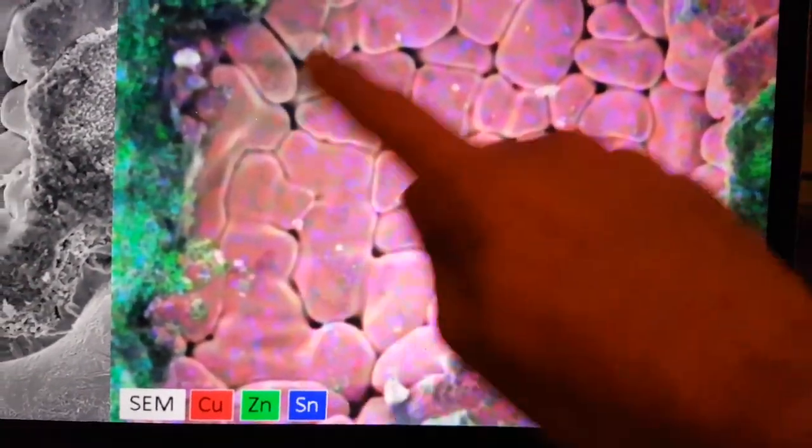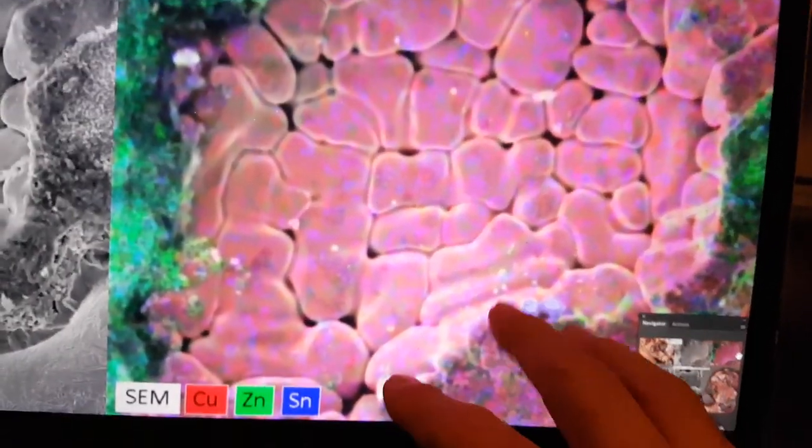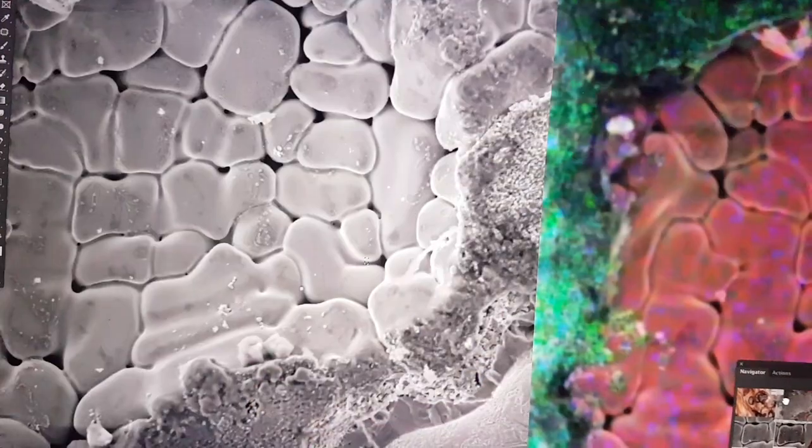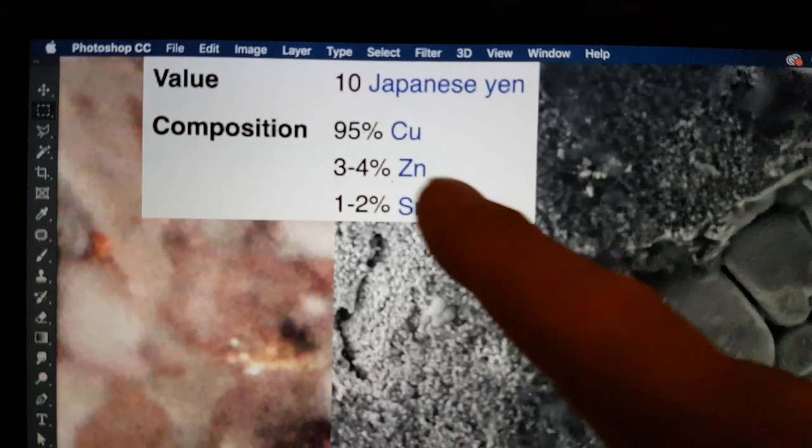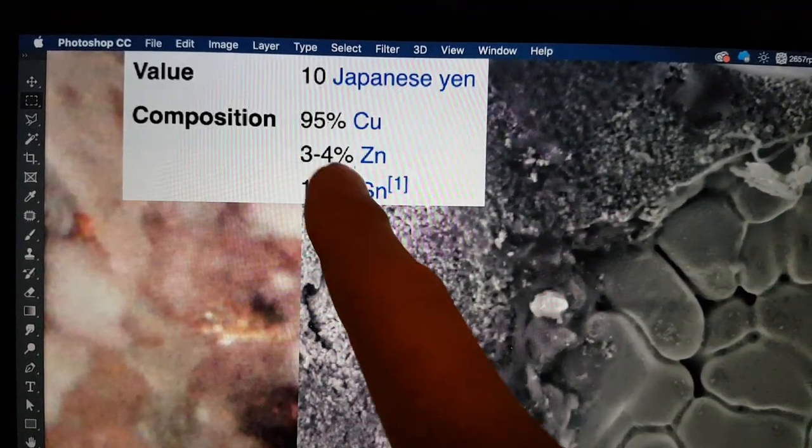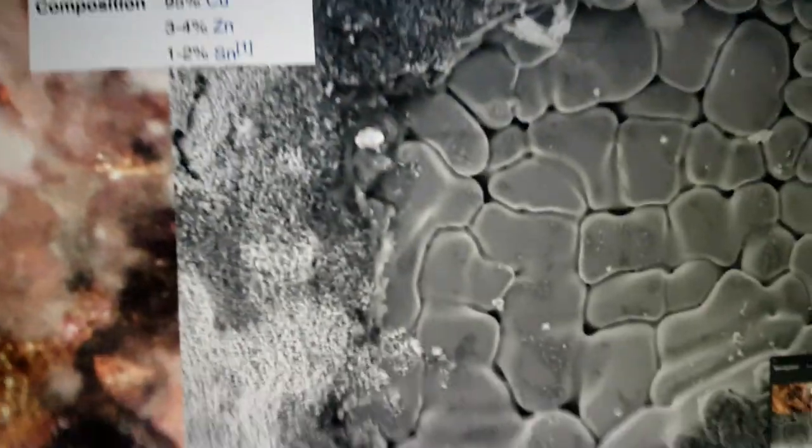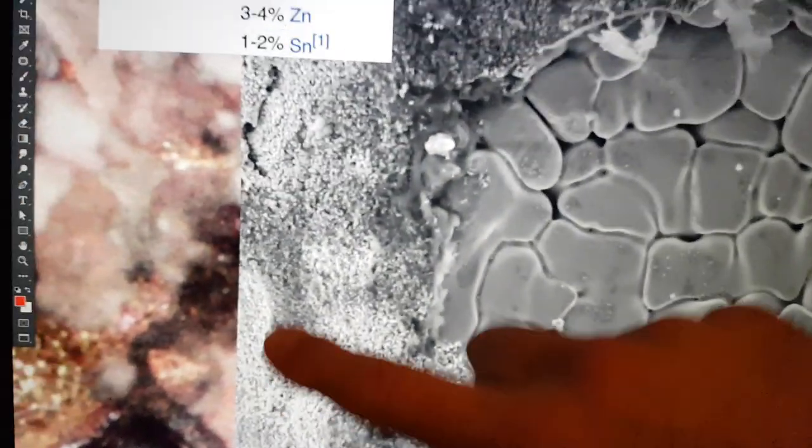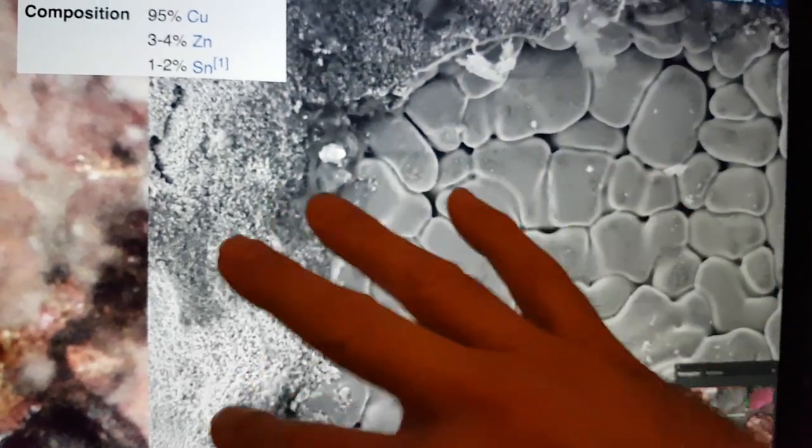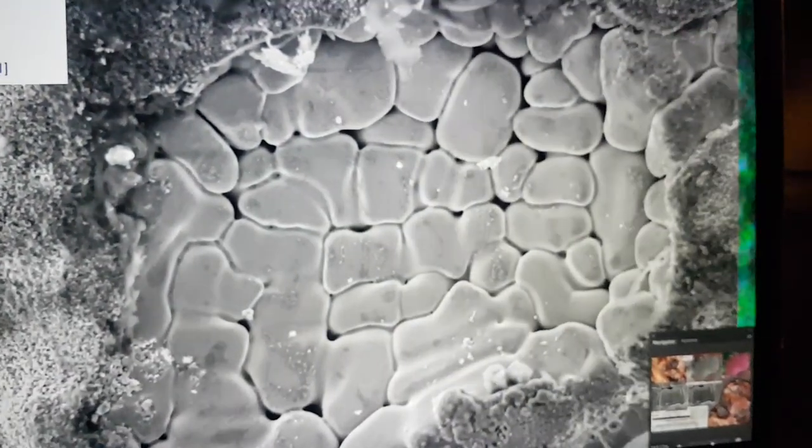What we're seeing here is actually this coppery type section. Essentially, most of it is the copper. And interestingly enough, whilst zinc, if you look at the proportions for the 10 yen coin, the Japanese 10 yen coin is 95% copper, 3-4% zinc, and 1-2% tin. The interesting thing is that this kind of crust here is almost entirely zinc, and this is copper.